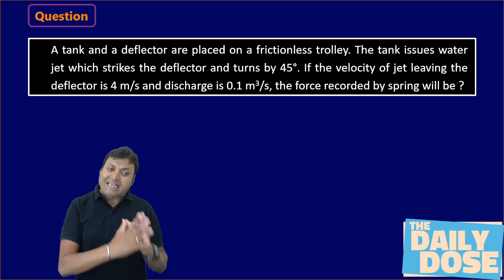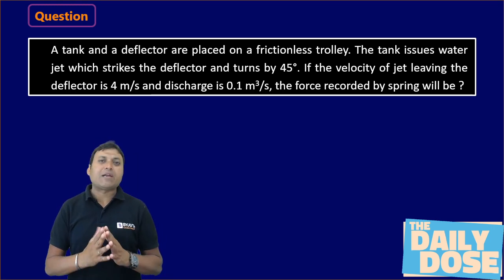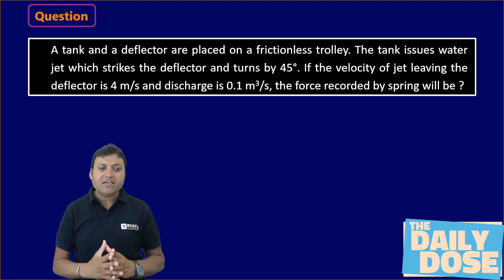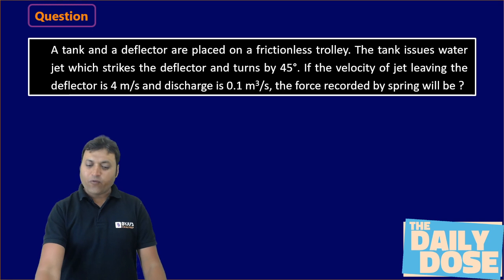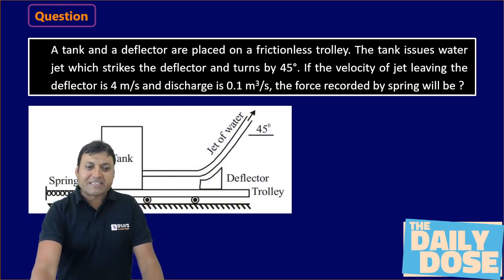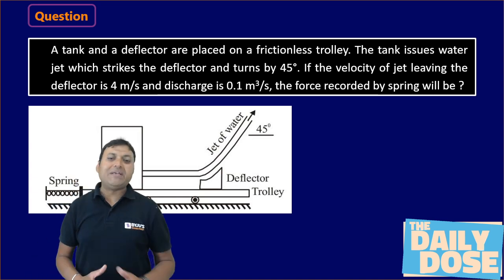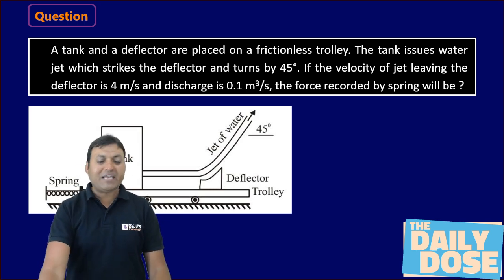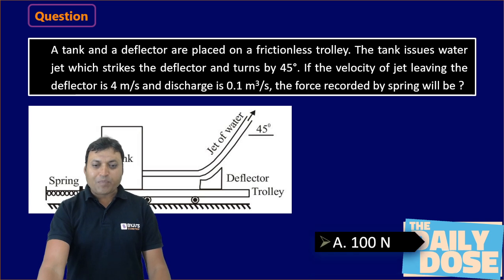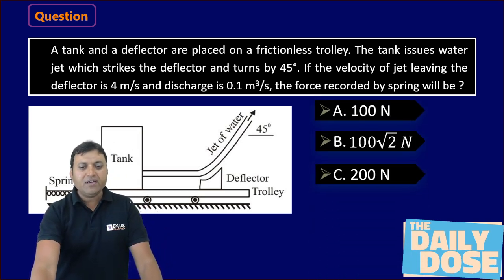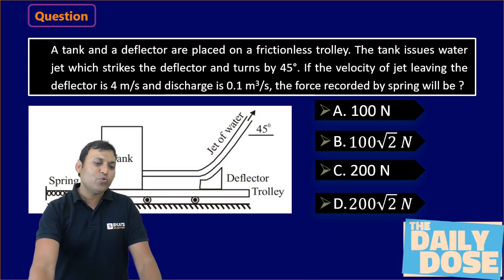The question says: there is a tank and a deflector which are placed on a frictionless trolley. The tank issues a water jet which strikes the deflector and turns by 45 degrees. If the velocity of the jet leaving the deflector is 4 meters per second and the discharge is 0.1 cubic meters per second, what will be the force recorded by the spring? The options are 100 N, 100√2 N, 200 N, or 200√2 N.